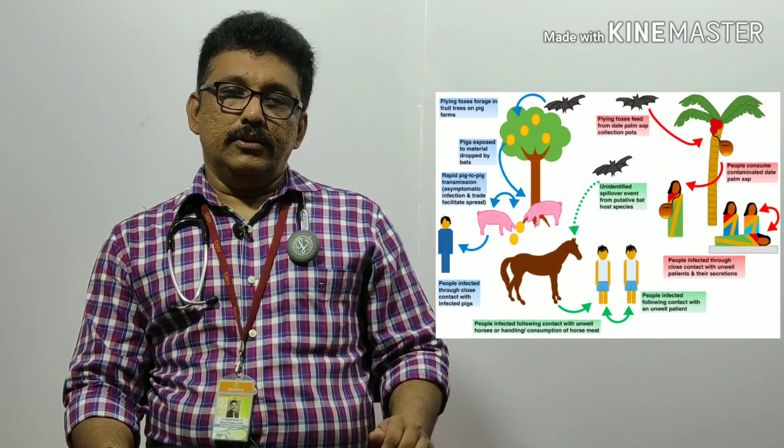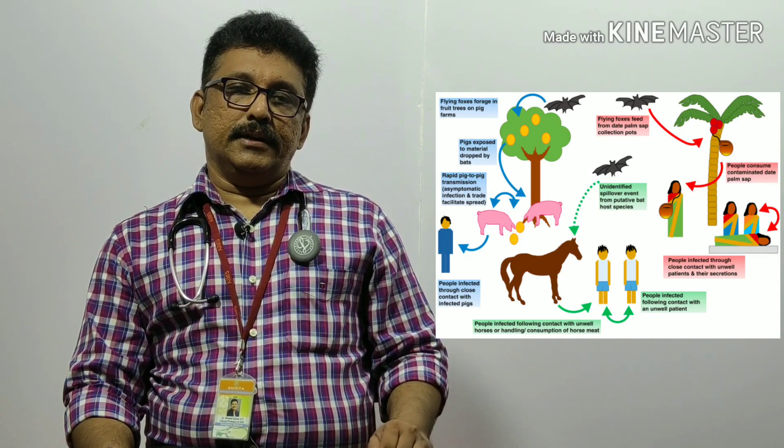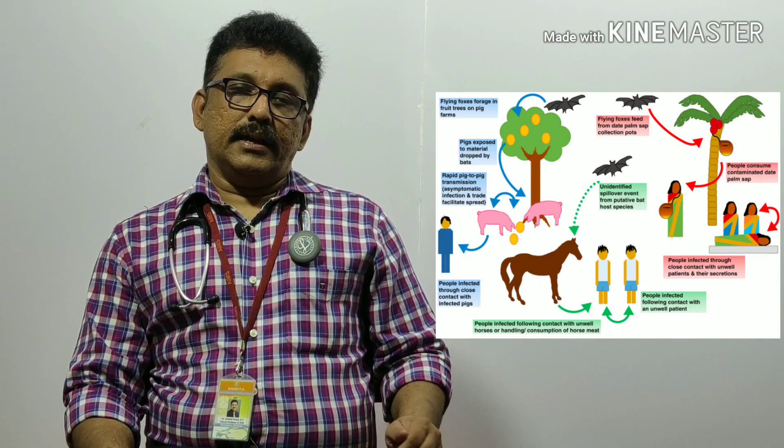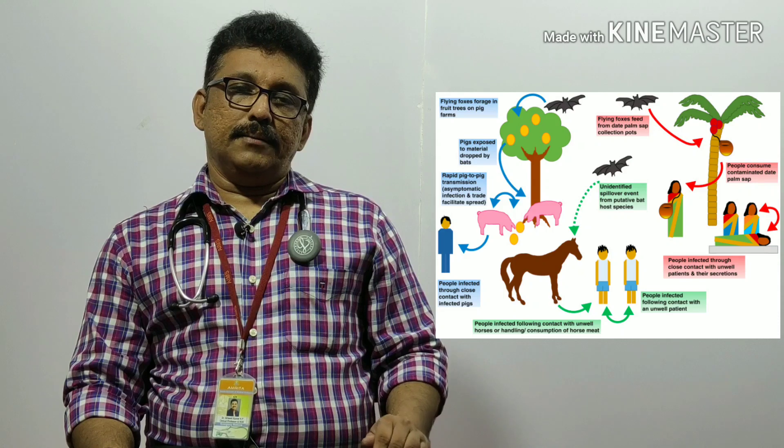Human infection occurs from bats or contaminated fruits. Human-to-human transmission can occur through saliva, secretions, or body fluids. The incubation period from onset of infection to disease is 7 to 40 days. Human-to-human spread is not very common but can rarely happen through secretions.